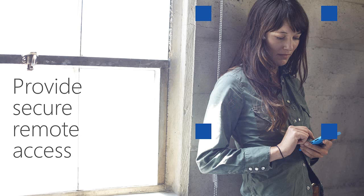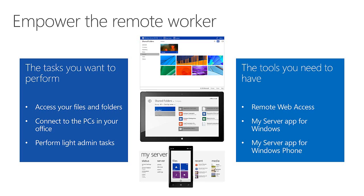The next aspect is providing secure remote access. More and more people are working remotely with mobile devices and want to access information in the Essentials environment — whether simply accessing files and folders, remotely connecting to PCs running in the office, running a specific application, or doing light admin tasks like resetting passwords or checking alerts. The tools available include the Remote Web Access portal, the My Server app for Windows (any Windows 8 computer, laptop, or tablet), and the My Server app for Windows Phone.